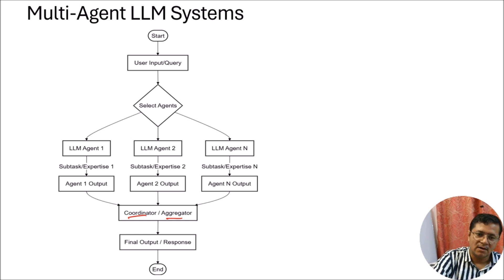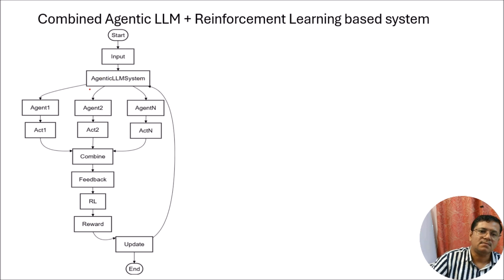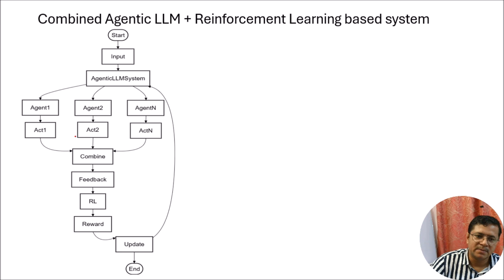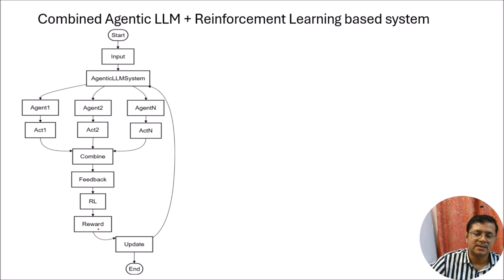Now we will see how the combined system looks. We start, then feed the input to the agentic LLM system. The agentic LLM system gives that input to multiple agents, which generate multiple different actions. An aggregator combines those actions and passes them through the environment, where the system gets feedback. The feedback goes to the reinforcement learning agents, which decide based on the reward or output whether to update the system or not, and then the cycle continues.